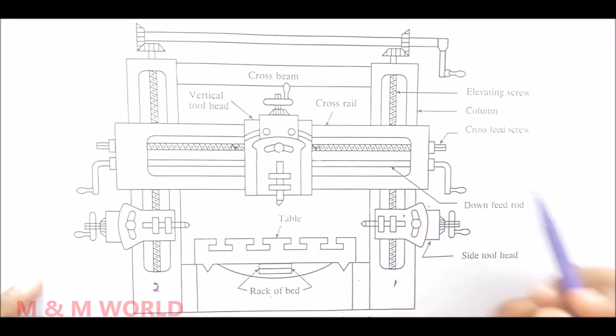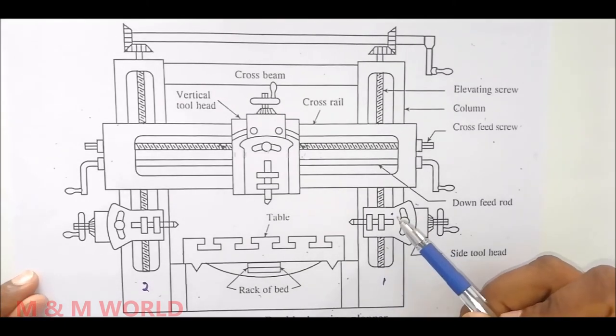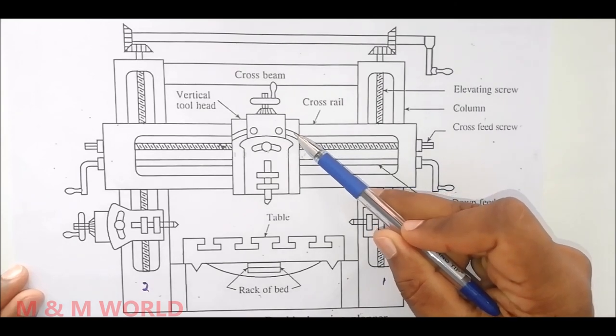Next one is tool head. The tool head of a planer is similar to that of a shaper, both in operation and construction. The tool head has a saddle, then swivel base.